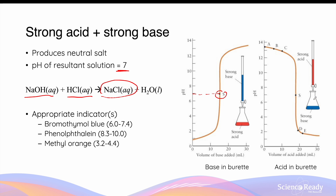Similarly, if we start with the base in the conical flask, the pH will start very high as it is basic, and it will slowly decrease in the beginning as the acid is being added from the burette. As it approaches the equivalence point, the pH will quickly decrease much more steeply until it reaches a pH of 7 again at the equivalence point. There are numerous indicators that are suitable for titration between a strong acid and a strong base. These include bromethyl blue, phenophyllin, and methyl orange. Now you might wonder, if the pH of a resulting solution for this titration is 7, how come these indicators, where their pH ranges are nowhere close to 7, are also considered appropriate?